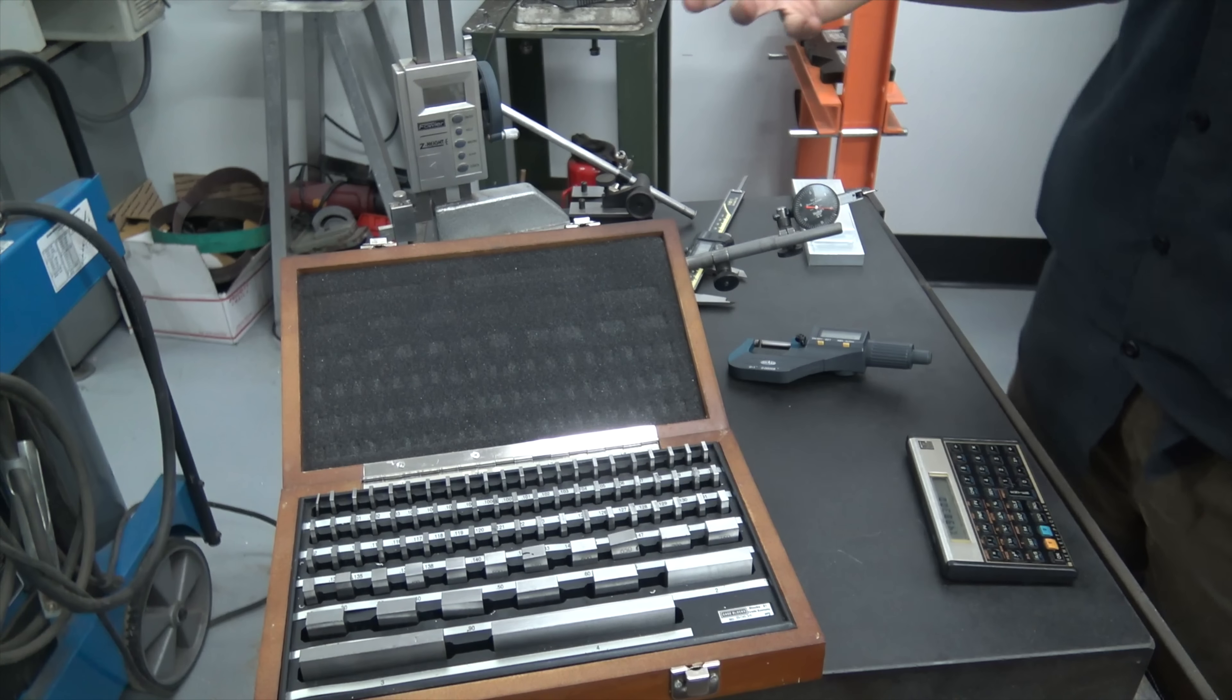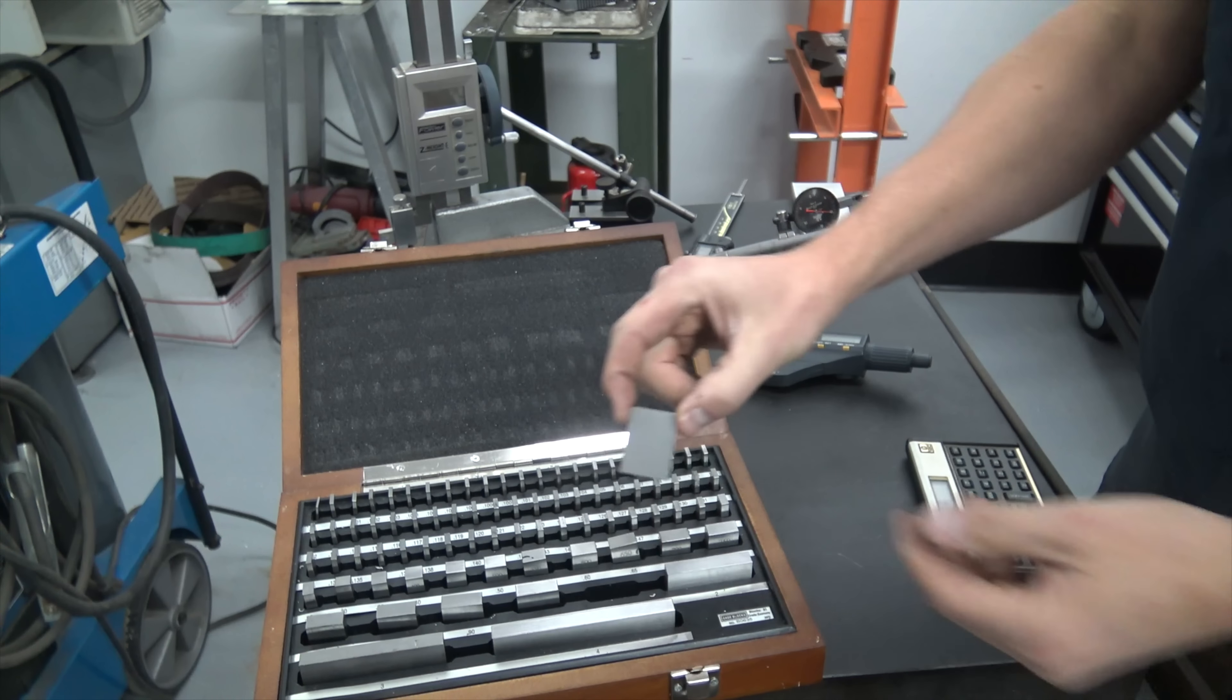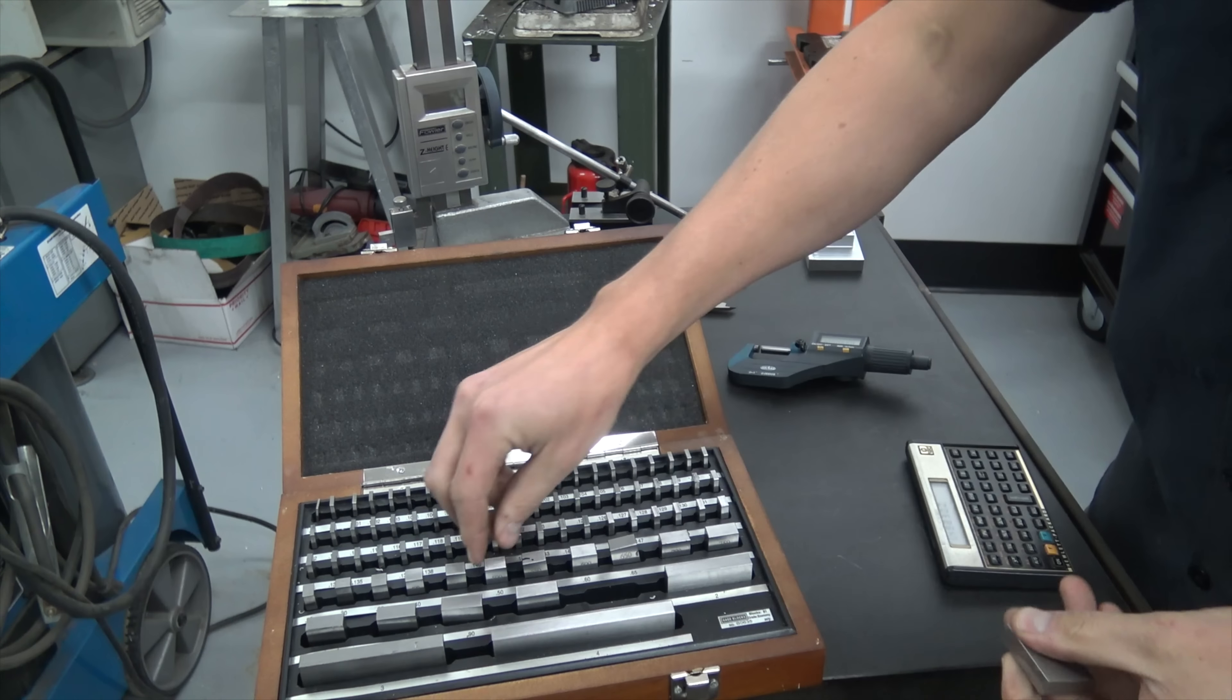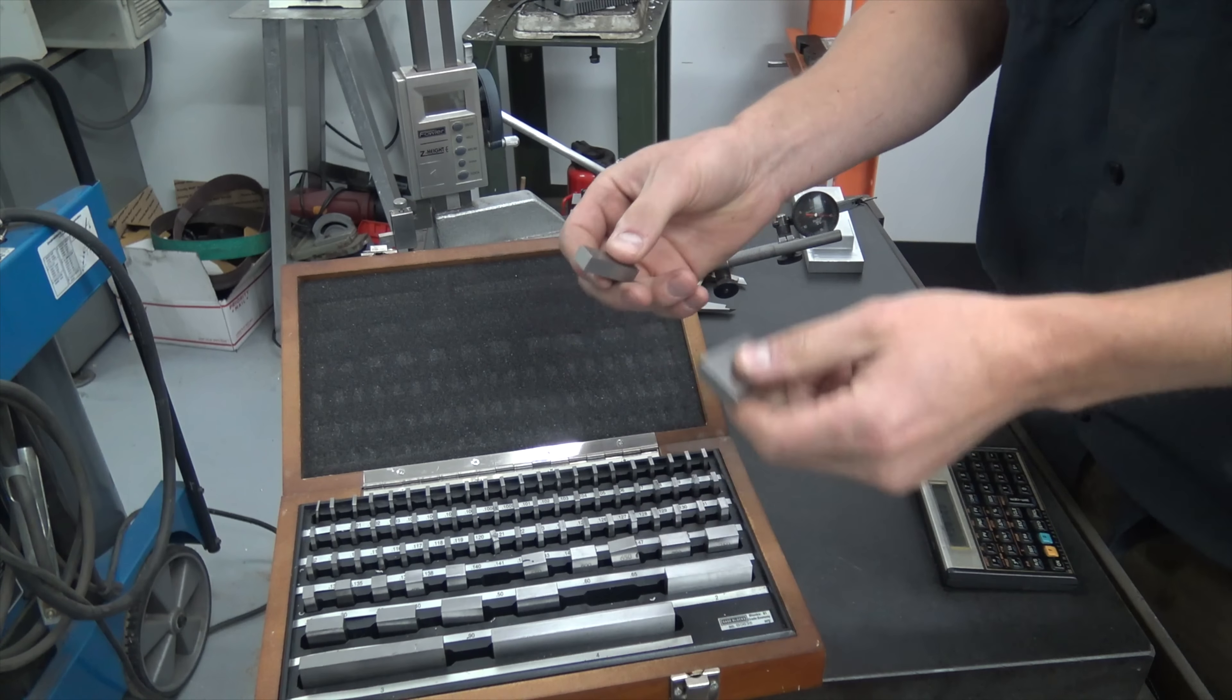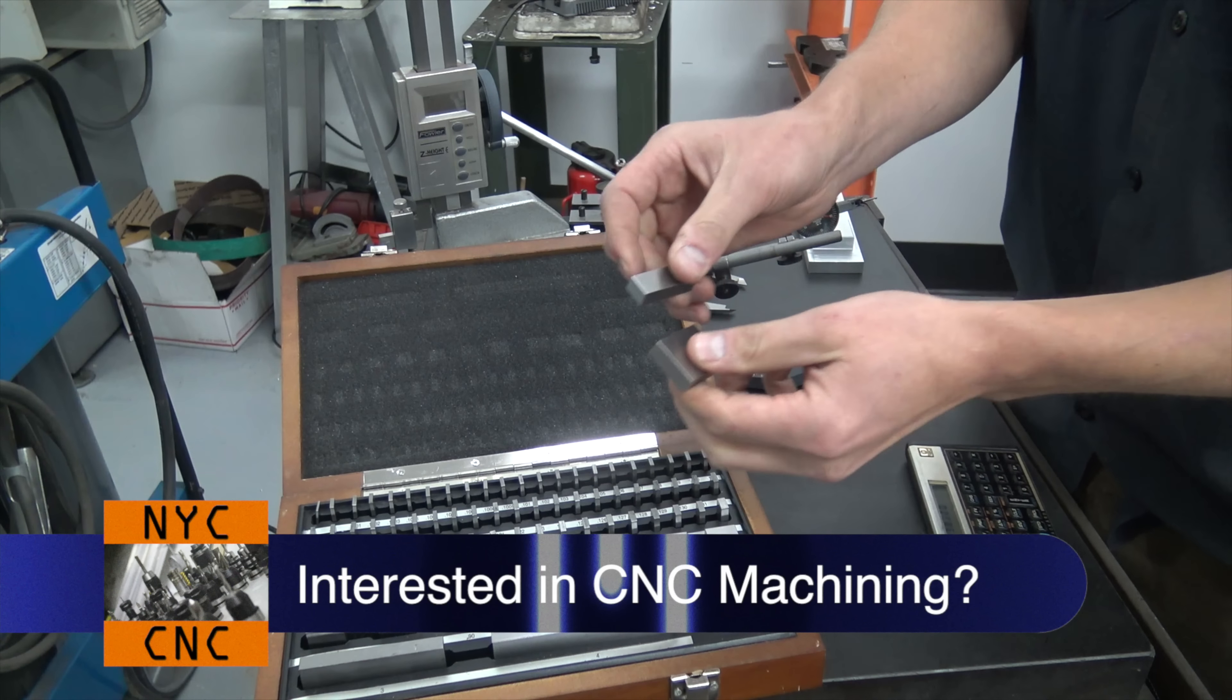Then of course you need the gauge blocks. We bought these new. These are Shars, they're fine. This is all a question of what you want to get out of it. We think this is supposed to be an inch and a half, so we'll grab the one inch and the half inch. Here's the cool thing about gauge blocks: you know they're accurate because you bought them hardened and ground, subject to the quality that you bought. I'm fine with these for what we do. But you also know that they're accurate and clean if they ring together.